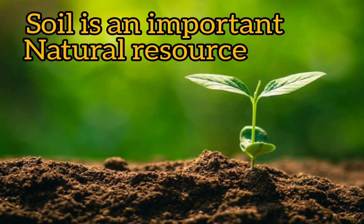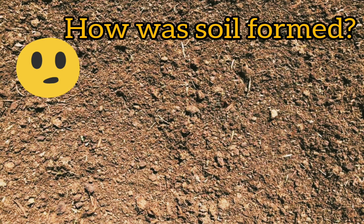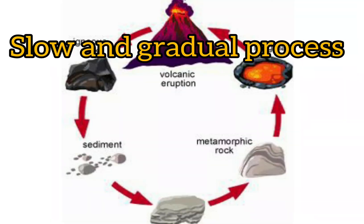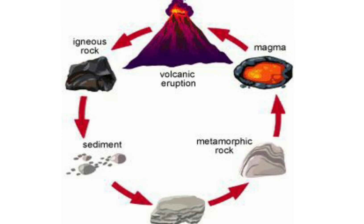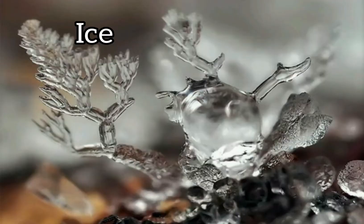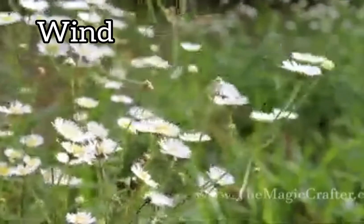Soil is a very important natural resource, but how was it formed? Soil formation is not a very steady or fast process — it is a very slow and gradual process. It took thousands of years to form a layer of soil by the breakdown of rocks. This process of breakdown of rocks is called weathering. Weathering is done by the action of water, ice, wind, temperature, and even living organisms.